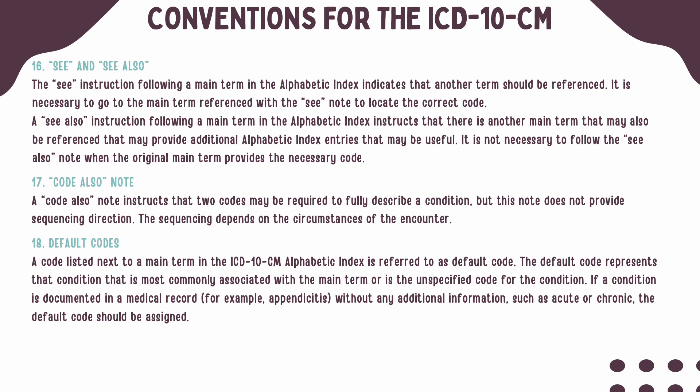In the tabular list, when a code also note is present, it instructs that two codes may be necessary to completely describe a condition. However, this does not provide sequencing direction, and your sequencing will depend on the circumstances of the encounter.